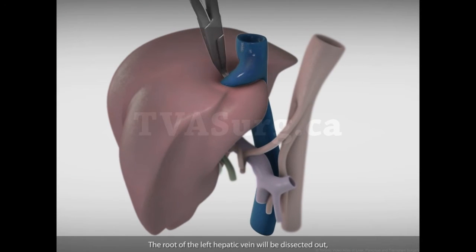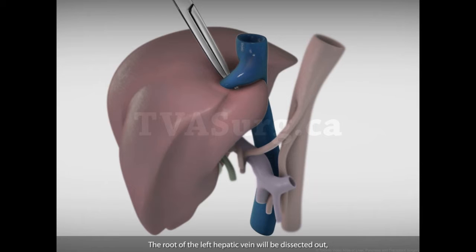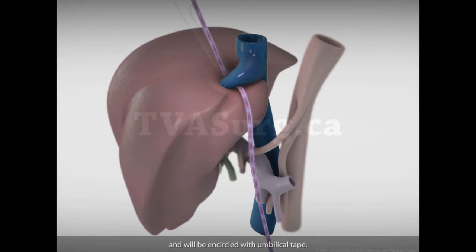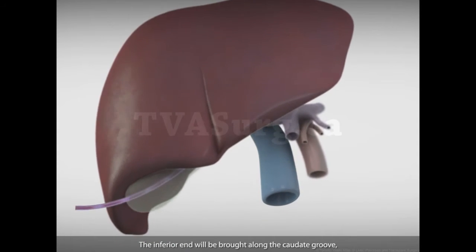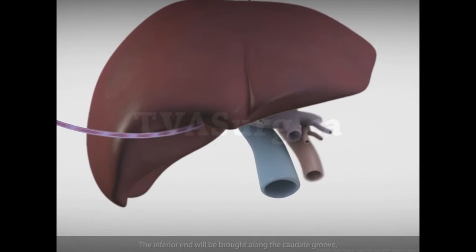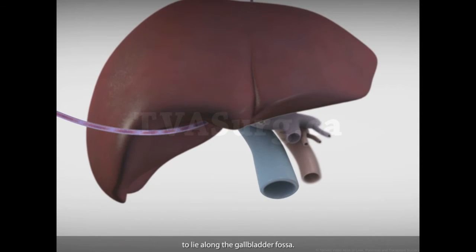The root of the left hepatic vein will be dissected out and encircled with umbilical tape. This tape will be used to sling the liver. The inferior end will be brought along the caudate groove to lie along the gallbladder fossa.